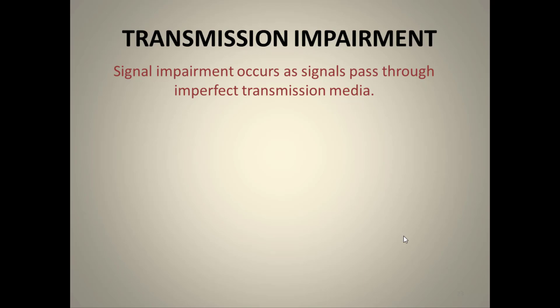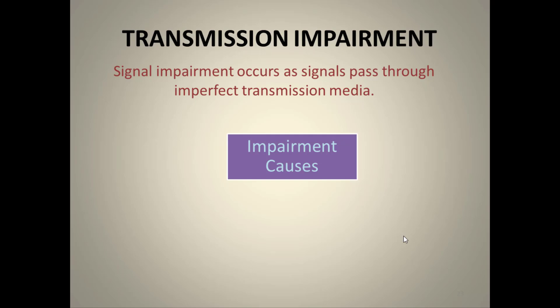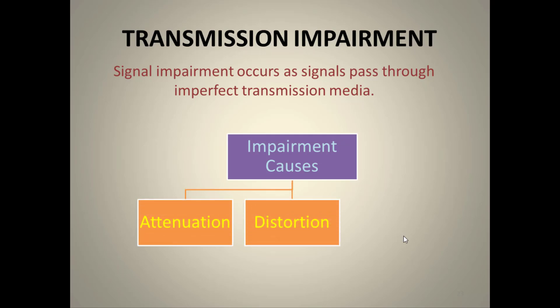Transmission impairment occurs when signals pass through imperfect transmission media. Because the media are not perfect, the signal gets distorted — what we send is not what is received. There are three causes of impairment: attenuation, distortion, and noise.